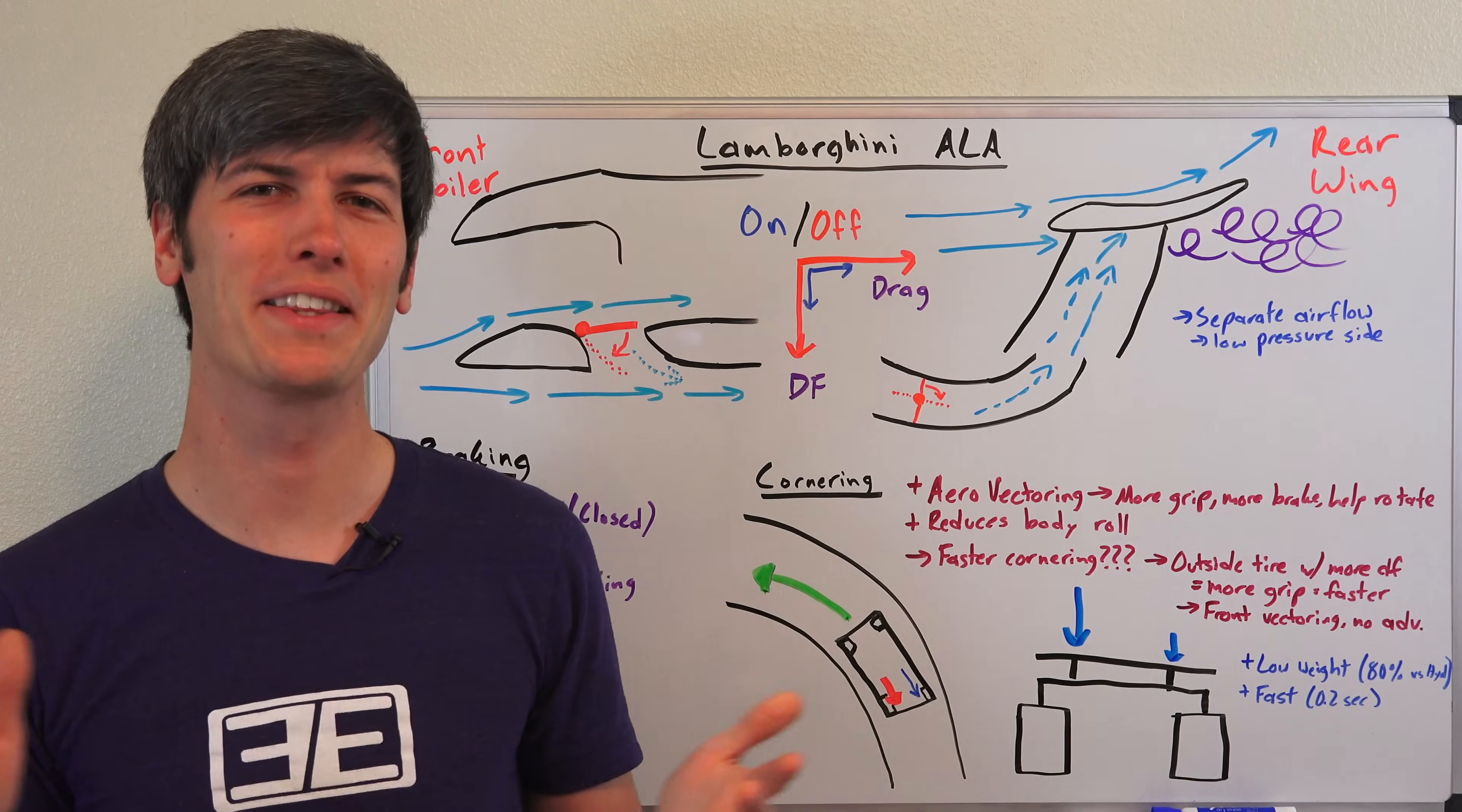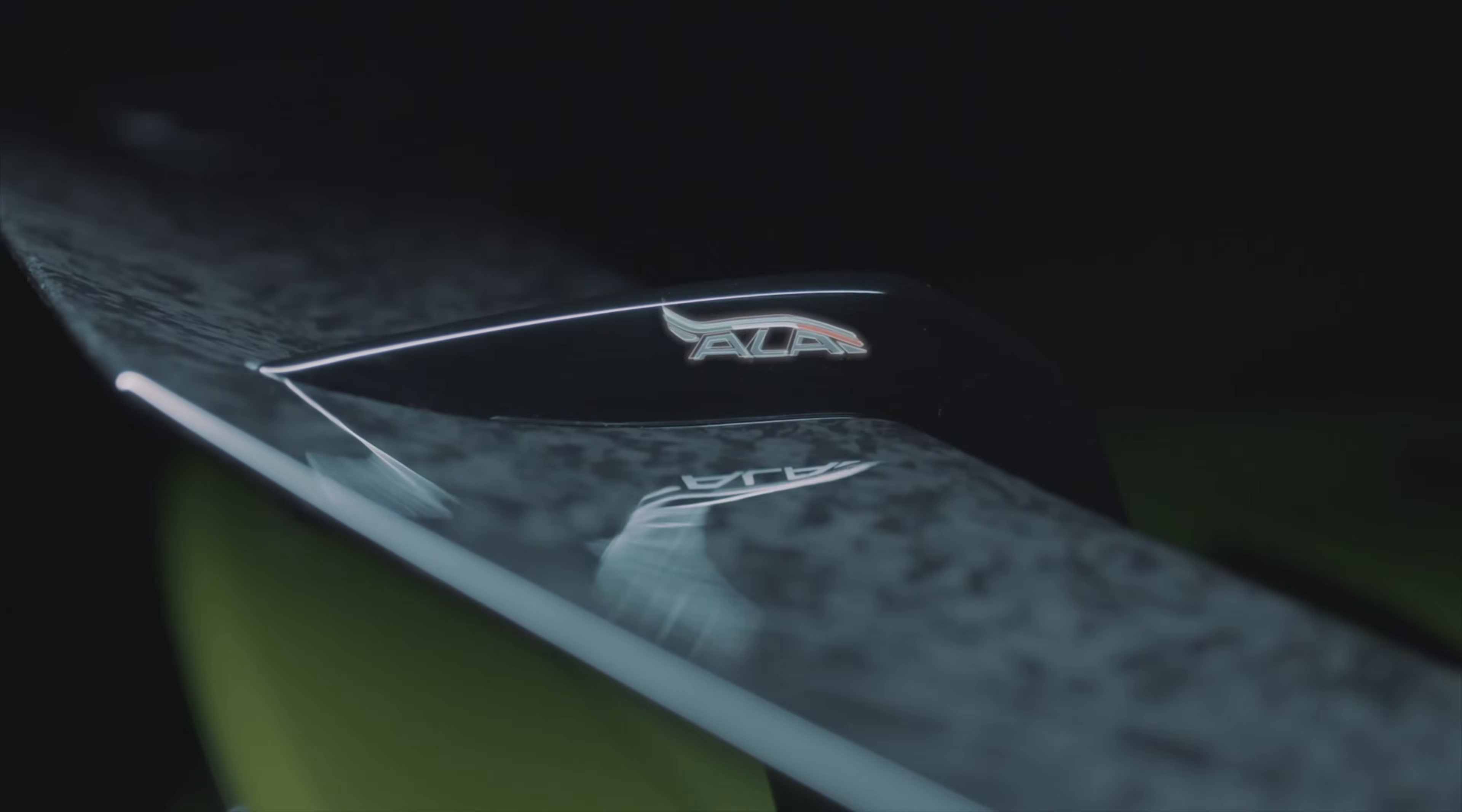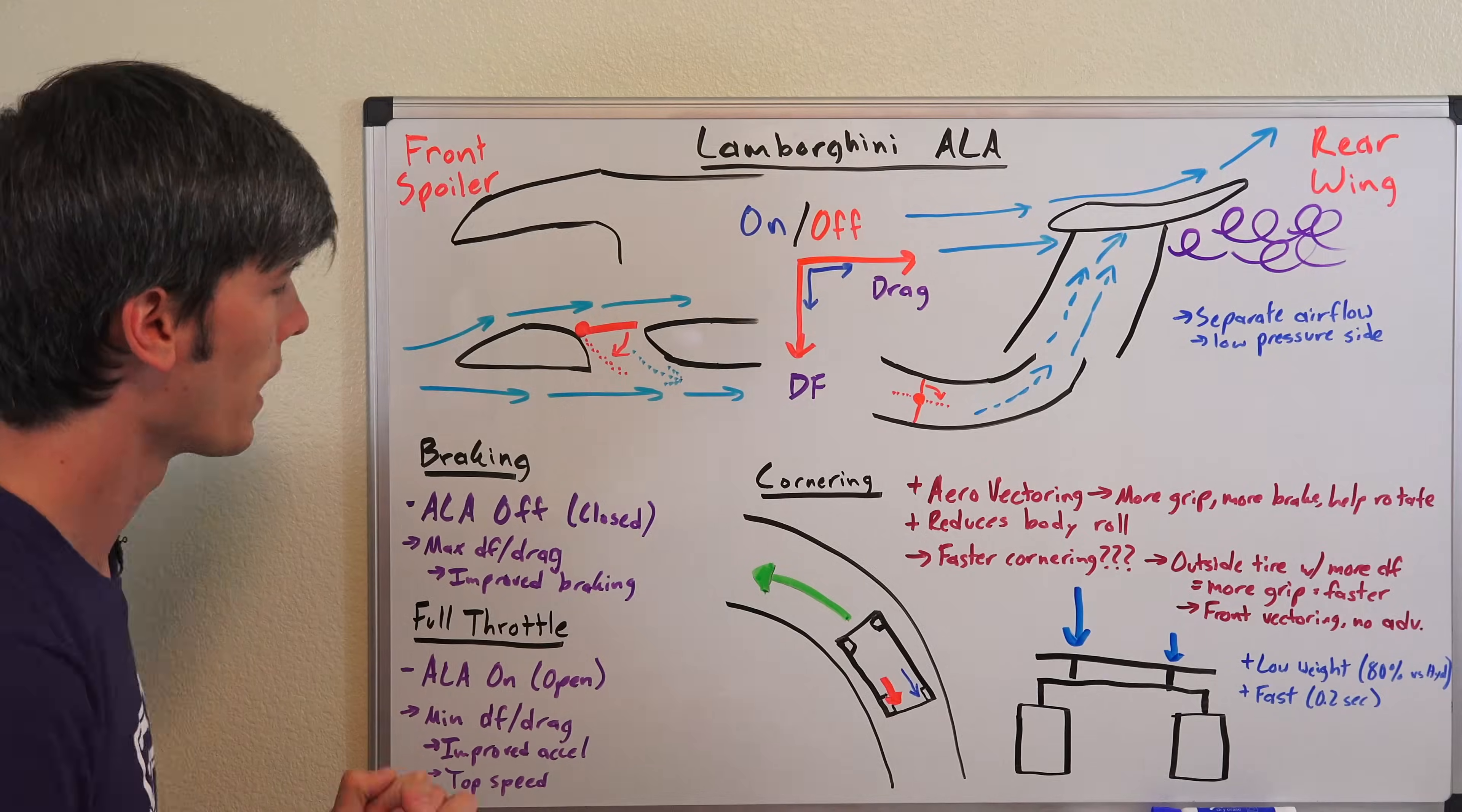Hello everyone and welcome. In this video we're going to be talking about how the active aerodynamic system on the Lamborghini Huracan Performante actually works. There's two areas where this is applying these active aerodynamic techniques: at the very front on the spoiler and then of course with the rear wing.